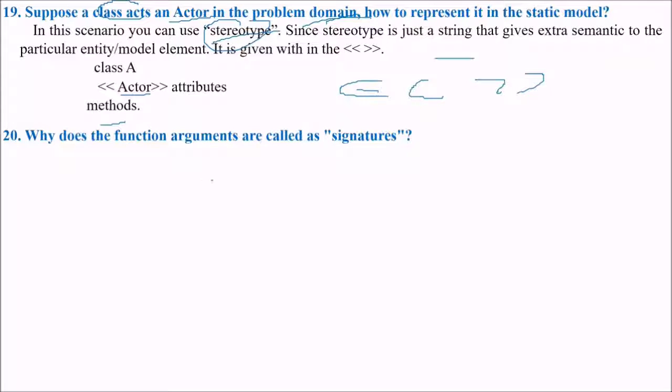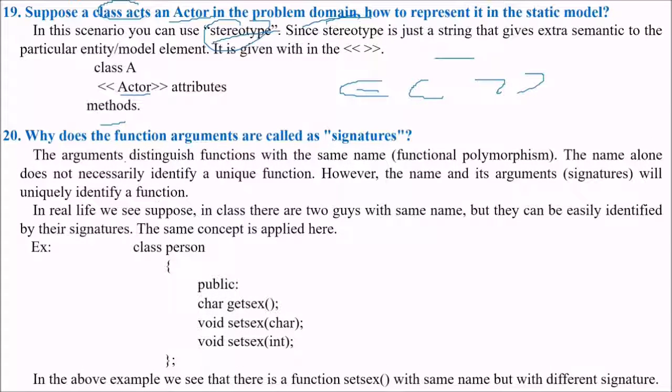Why does the function arguments are called as signatures? The argument distinguish functions with the same name, that is function overloading. The name alone does not necessarily identify a unique function. However, the name and its argument which are the signatures will uniquely identify a function. In real life if in a class there are two guys with the same name, they can be easily identified by its signature. The same concept applies here also. For example, a person we have three functions. In this example we see that there is a function with same name but with different signatures.